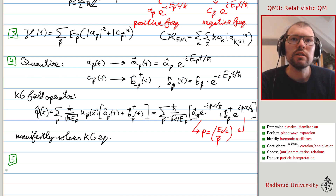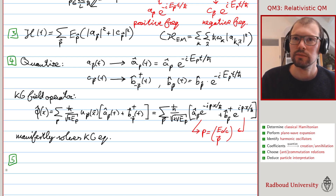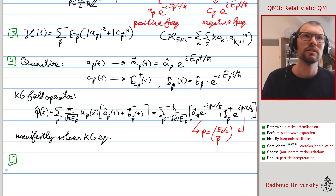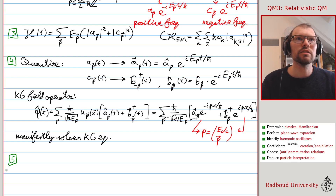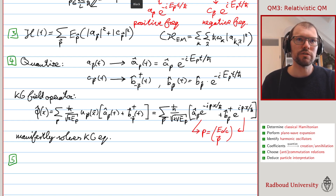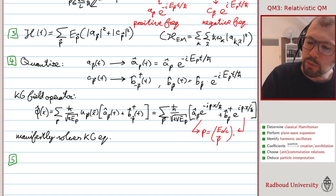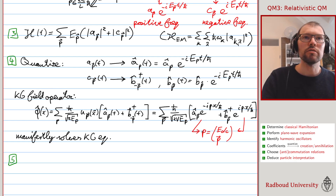Next step: specify the appropriate commutation relations. We already have a clear expectation since these are spin-zero particles expected to be bosons, but let's see where this identification comes from. We impose criteria we want on the theory, and one crucial criterion is having energies bounded from below. Let's check what our definition of the Klein-Gordon field operator means for the energies of the system.